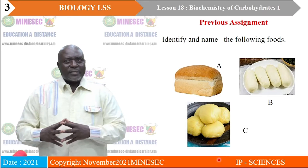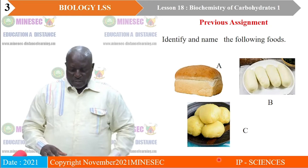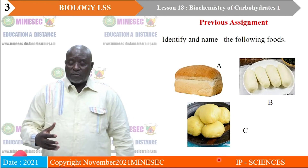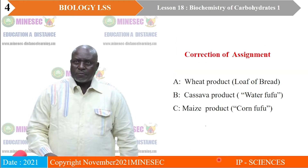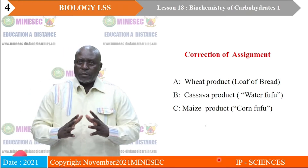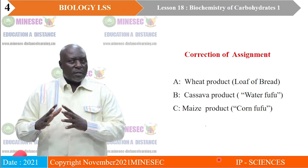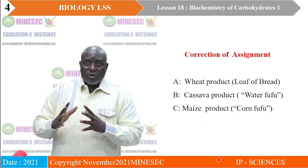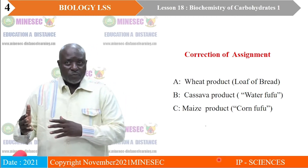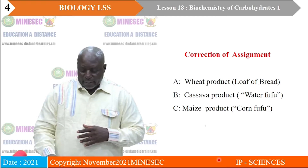The assignment wanted you to identify and name the following foods: A, B, C. I expected you to have looked at, examined, and observed the photographs and then identify and name them. Picture A is related to a wheat product — a loaf of bread. Remember that the source material for bread is either wheat or any other cereal. Picture B is connected to a cassava product.